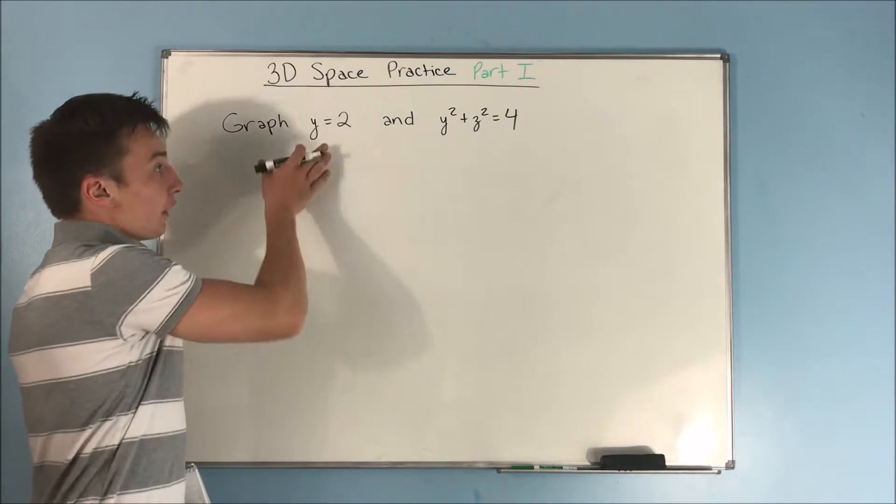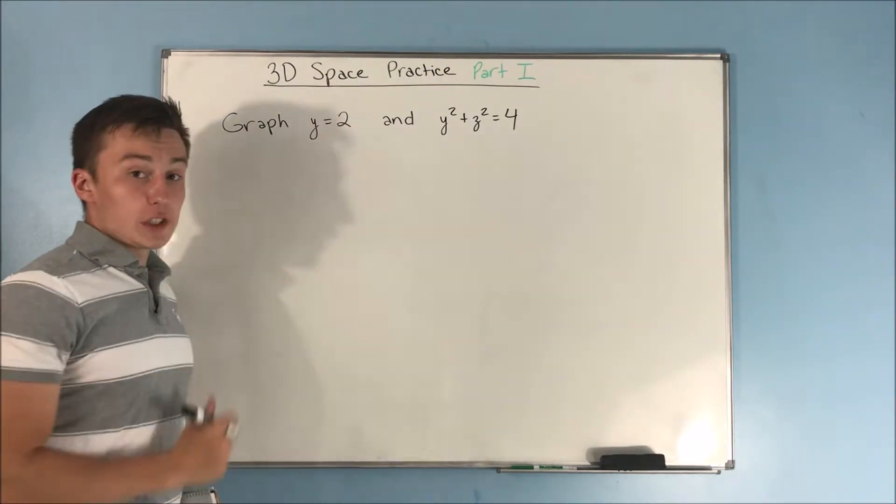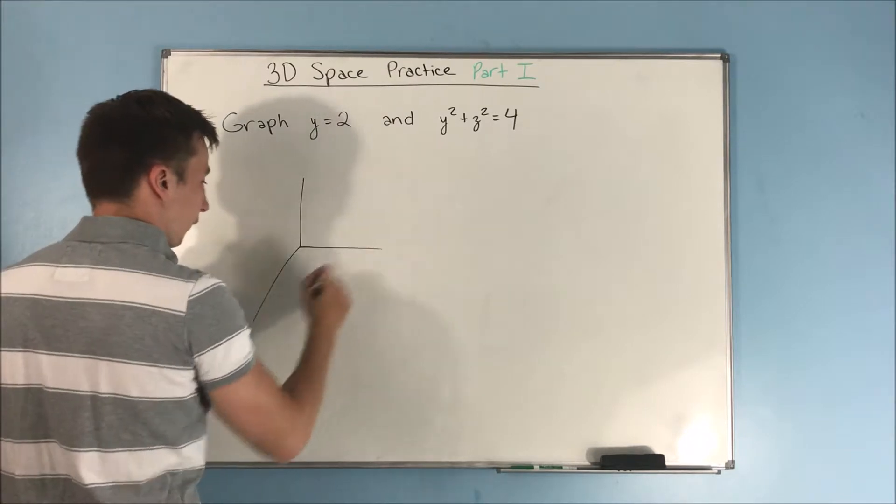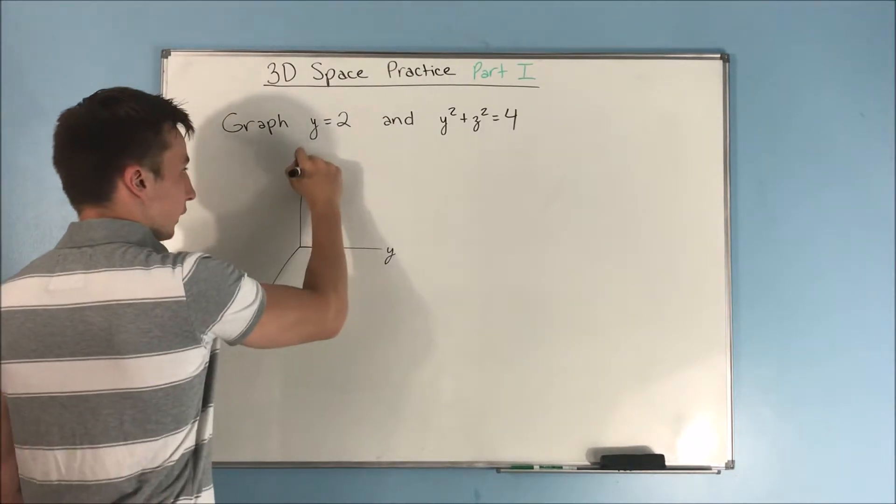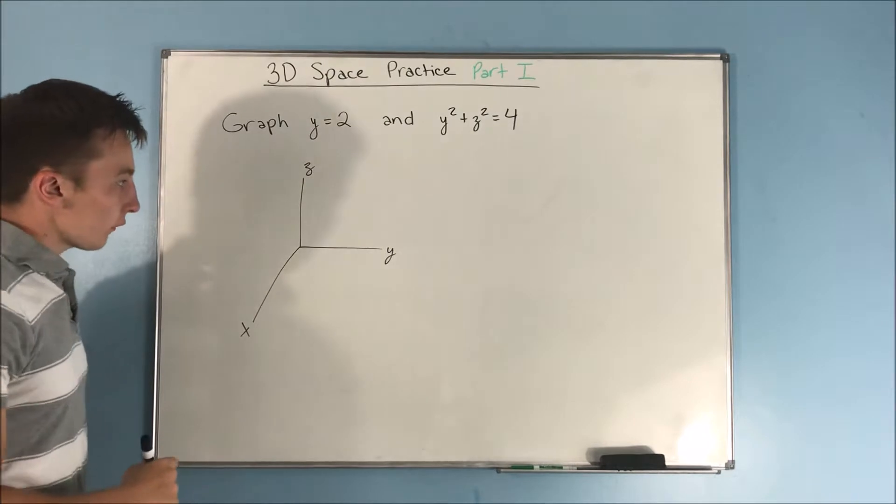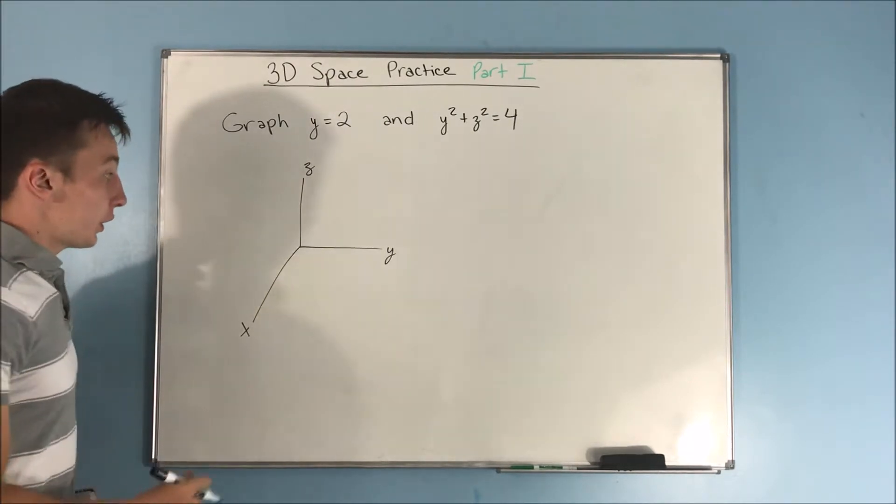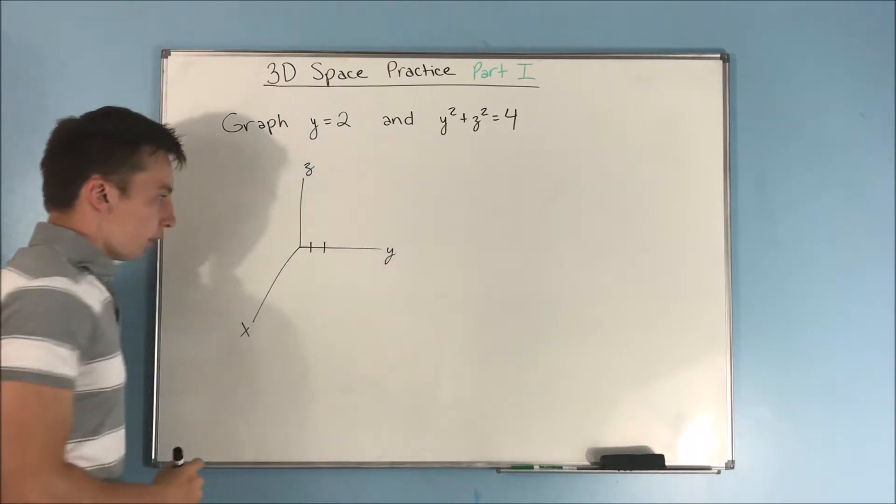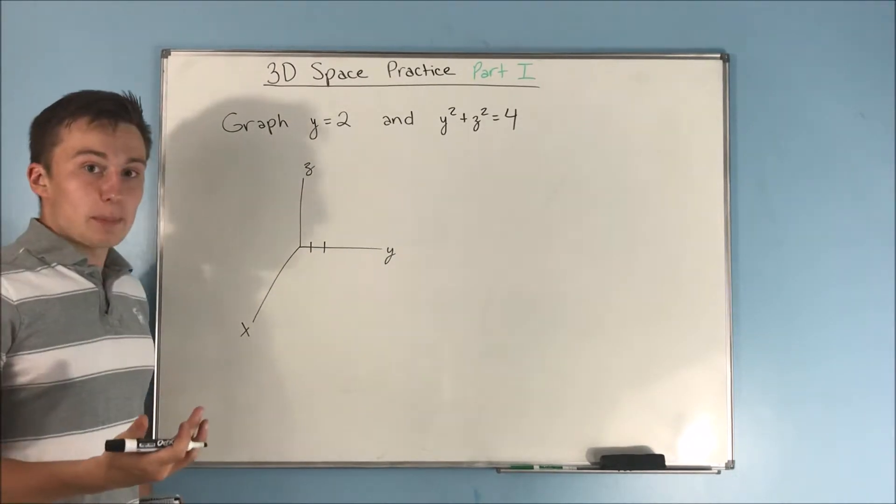So next we want to graph these two equations. Here we have first y equals 2. So let's graph y equals 2. We have an x right here, y right here, z right here. So y equals 2, we're just going over 2. And that's basically it.